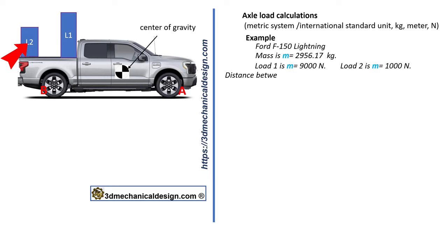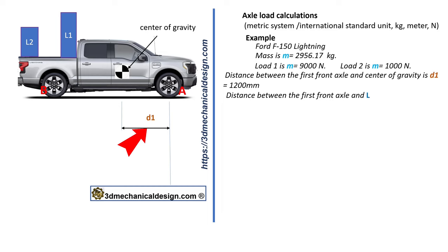Distance between the first front axle and center of gravity is D1 equals 1200 millimeters. Distance between the first front axle and L1 is D2 equals 3200 millimeters.